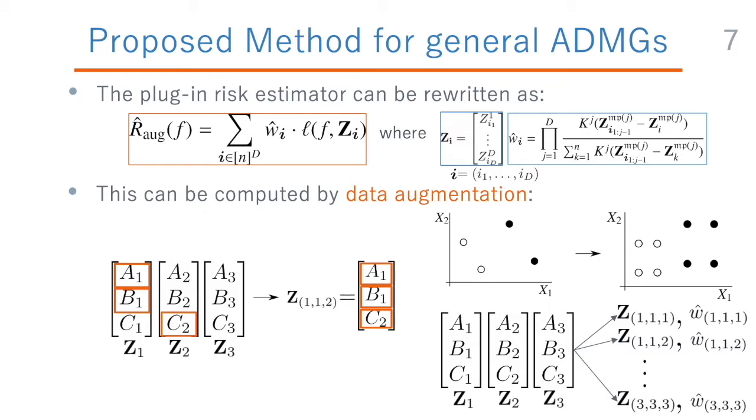Then, the pseudo-data point bold z(1,1,2) is obtained by collecting the first and second elements from z1, and the last element from z2. The proposed risk estimator can be computed by generating all such pseudo-data points for all combinations of the indices.